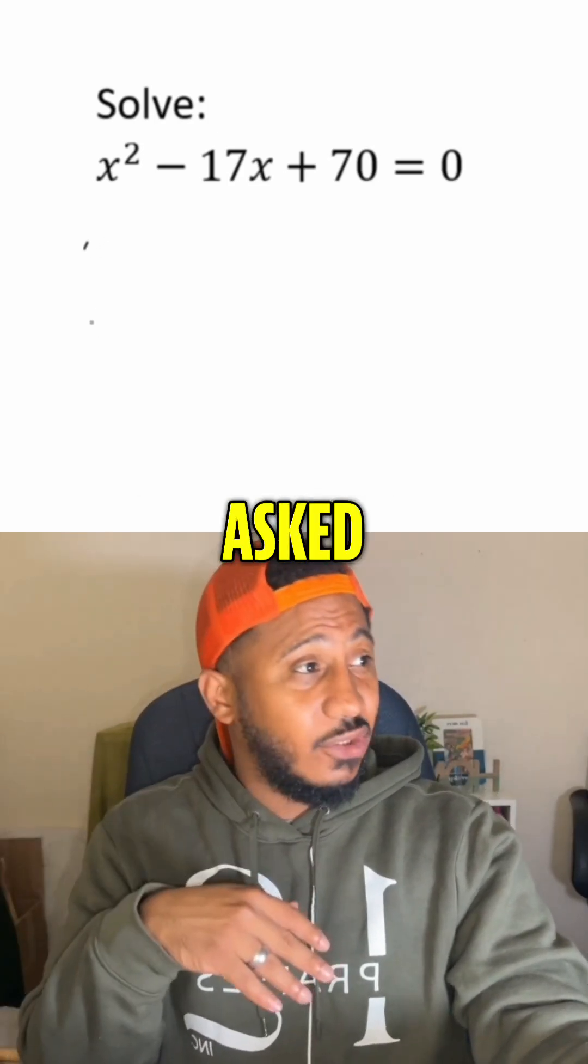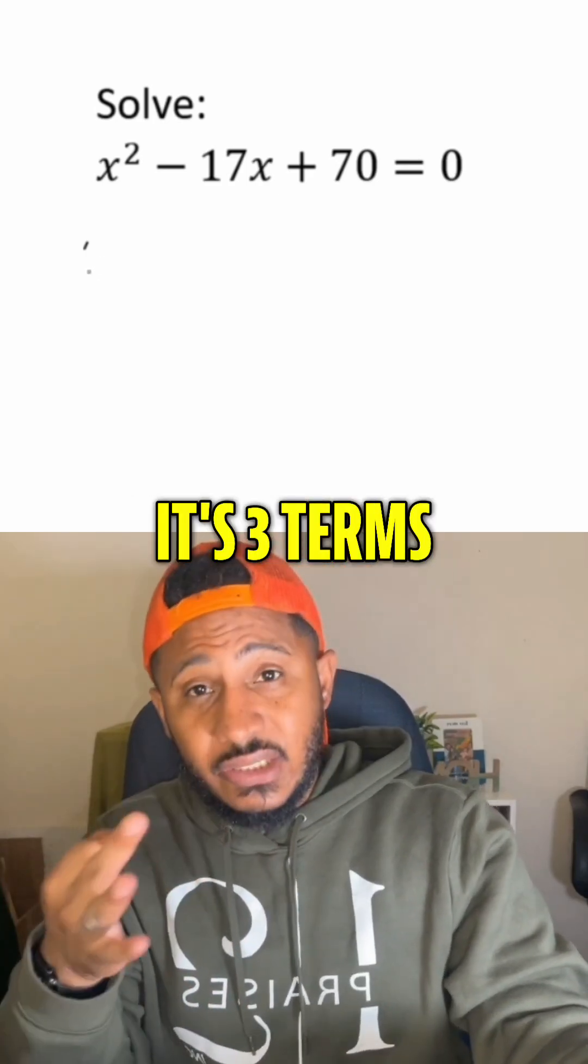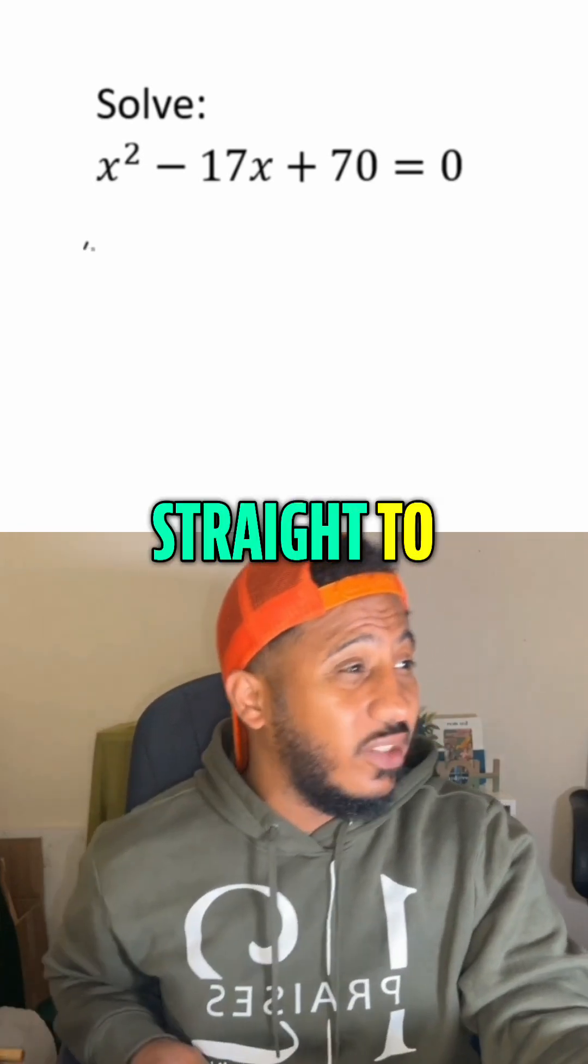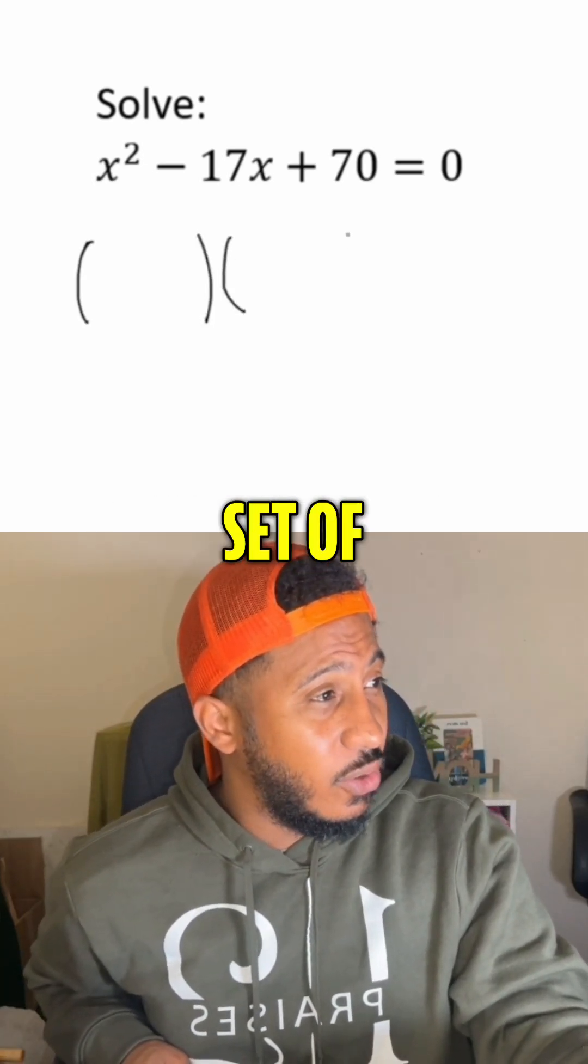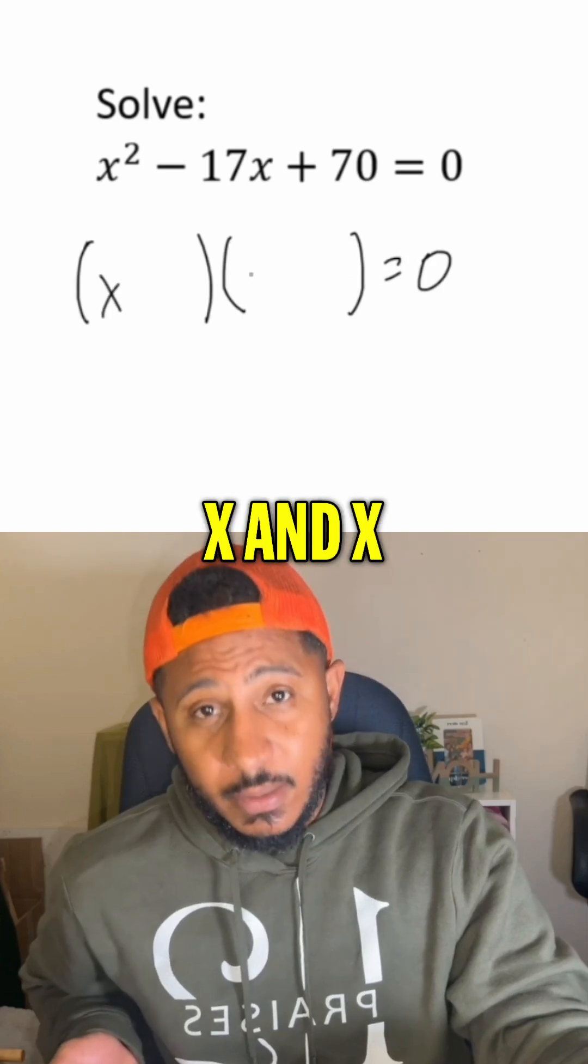Now, I've done a problem like this before, but someone asked how exactly do you factor this left-hand side? It's three terms, so it's a quadratic with three terms, and there's a one in front. We go straight to what we call double bubble. So put this double set of parentheses, x and x.